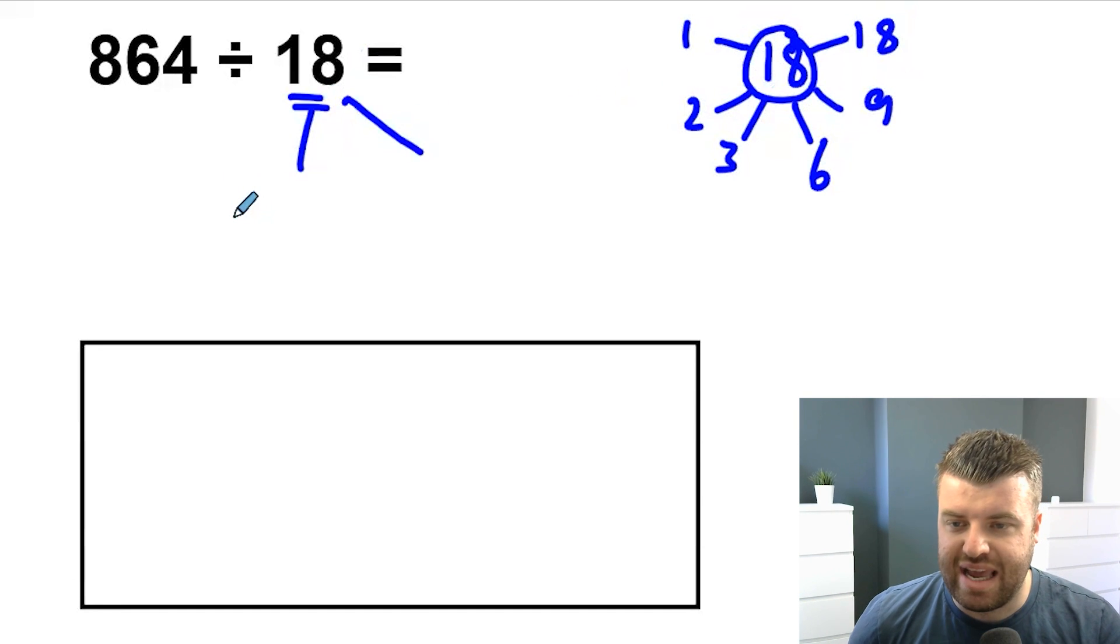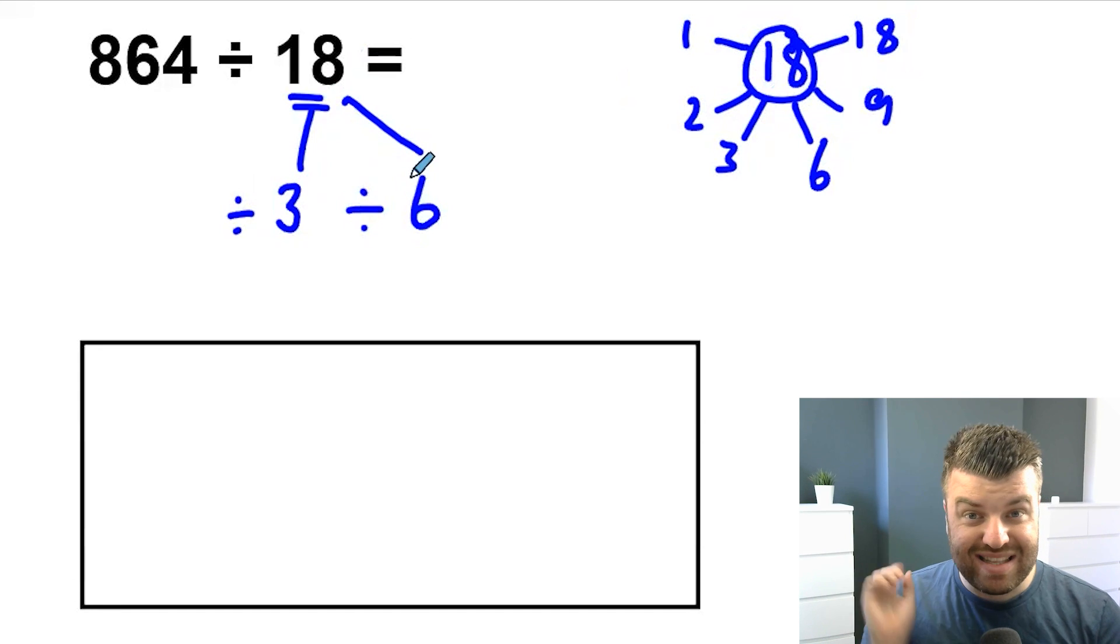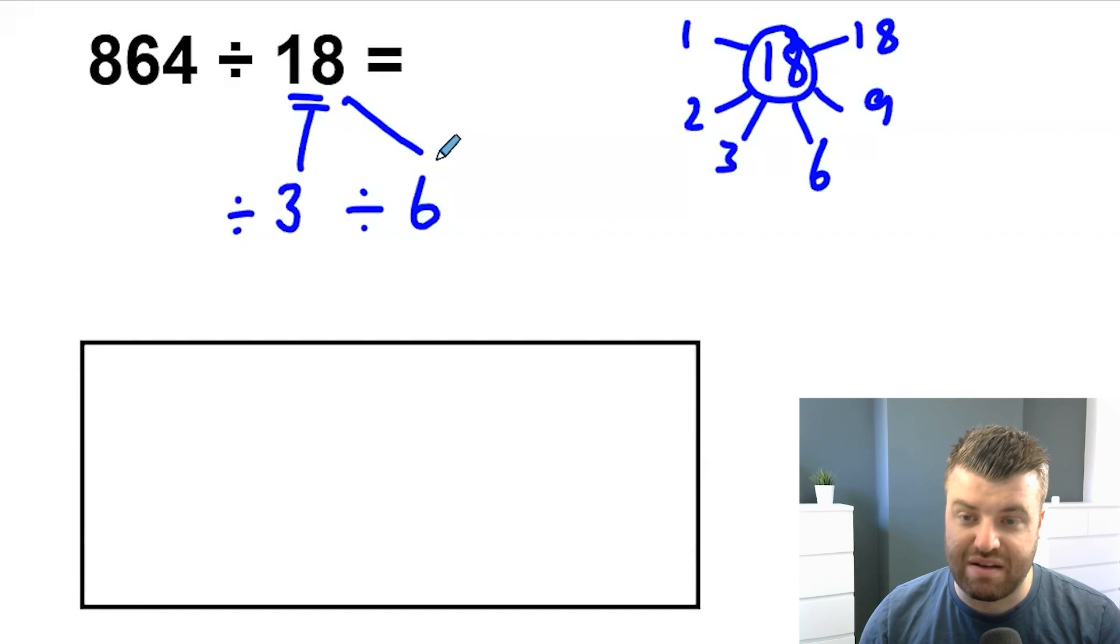So instead of dividing by 18, we're actually going to divide by, let's pick the factor pair 3 and 6. We're going to divide by 3 and then we're going to divide by 6. Dividing by 18 is the same as dividing by 3 and divided by 6. We know this because they are factors.